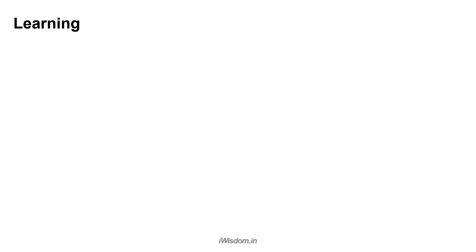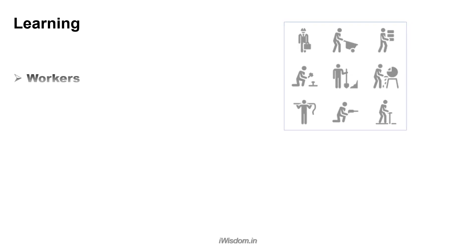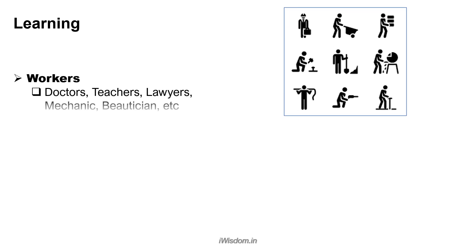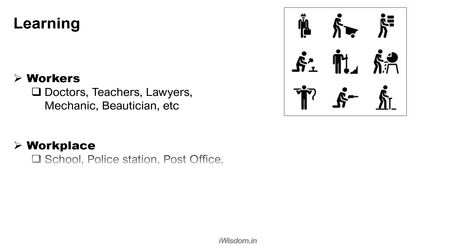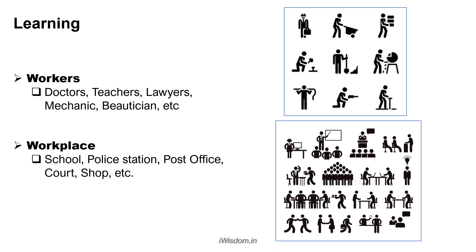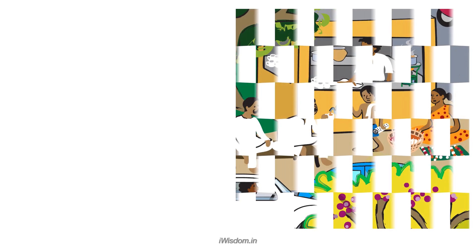Let's recap. We have workers like doctors, teachers, and lawyers who are skilled in providing specific services. Then we have workplaces like school, police station, post office, court, and shops where the work is performed by several workers coming together. With this, we come to the end of session two.